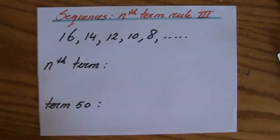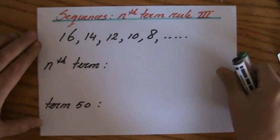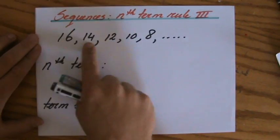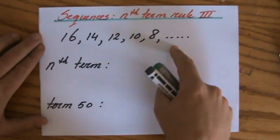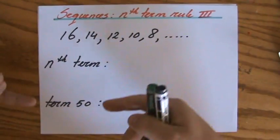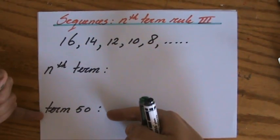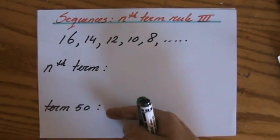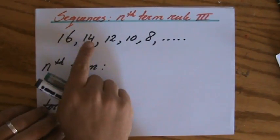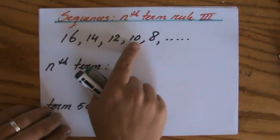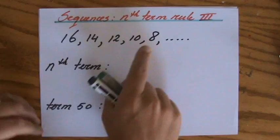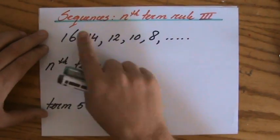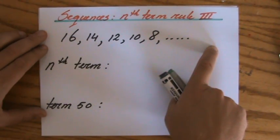Welcome back. This is Part 3 about the nth term rule, where we have a particular number sequence and we have to find the nth term rule, and then use that rule to find the value of, let's say, term 50. These are all terms: term 1, term 2, term 3, term 4, term 5. And that nth term rule will describe your number sequence.